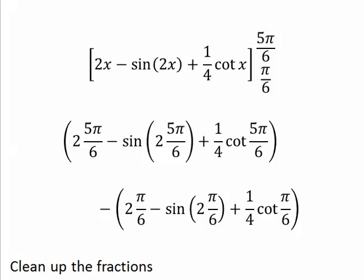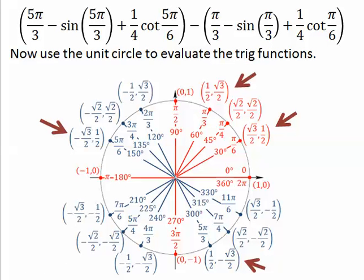So plug in the values. And we need to clean up our fractions. It helps to know what sine of 5 pi over 3 is and cotangent of 5 pi over 6 and sine of pi over 3 and cotangent of pi over 6. I found those angles for you so that you could find the ratios more easily.